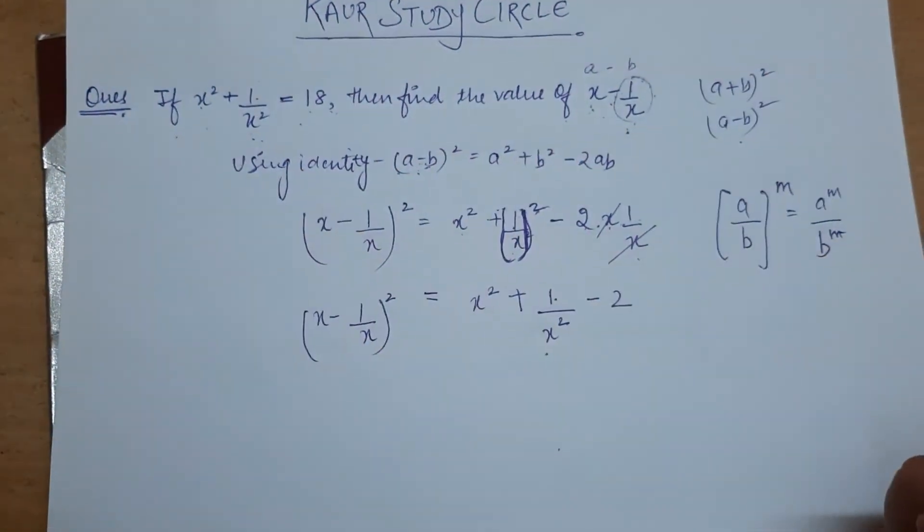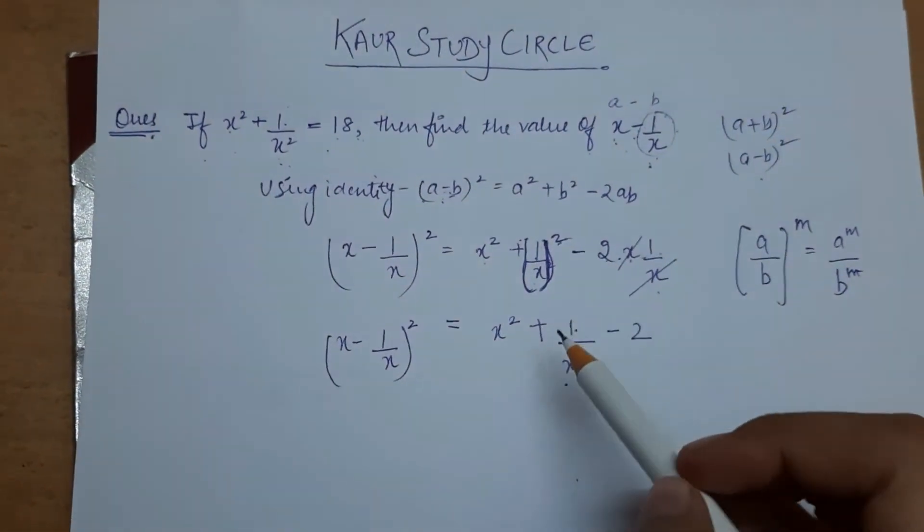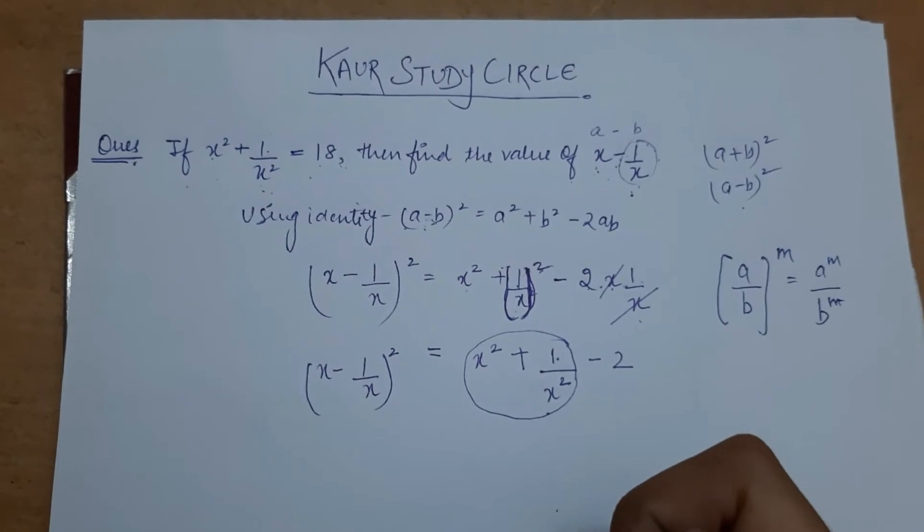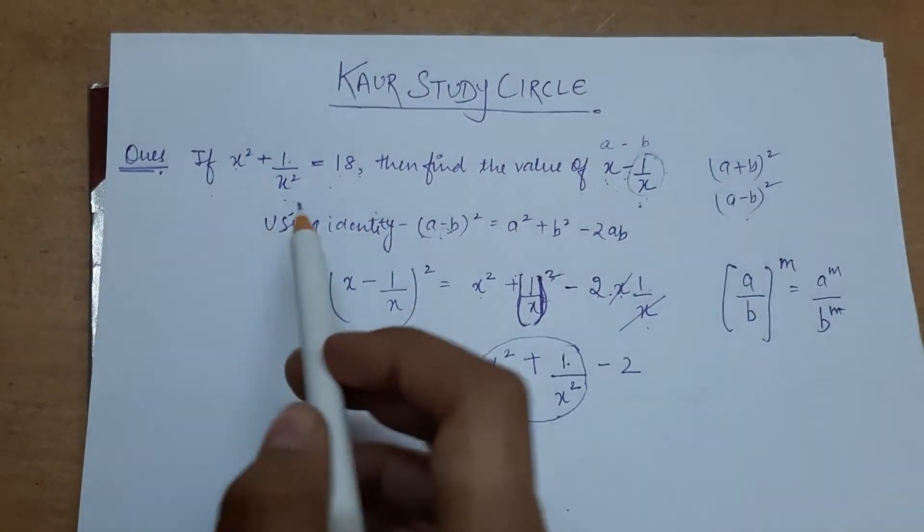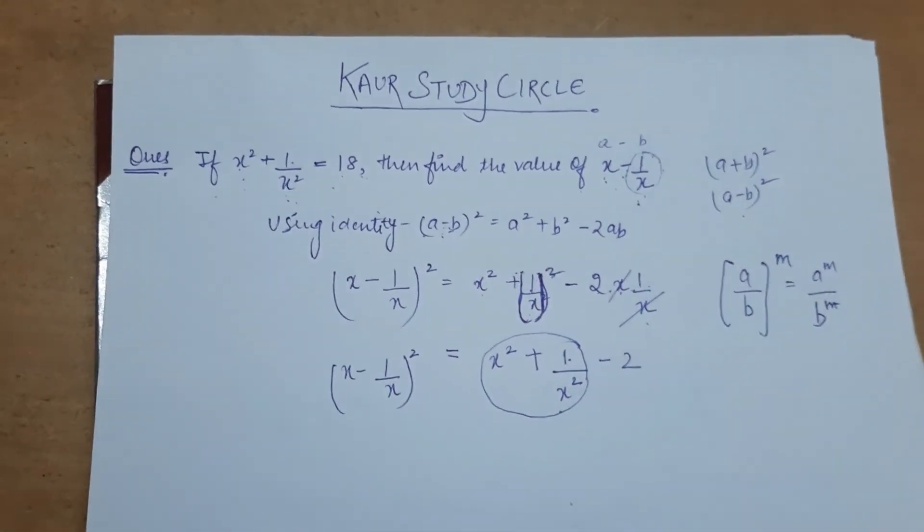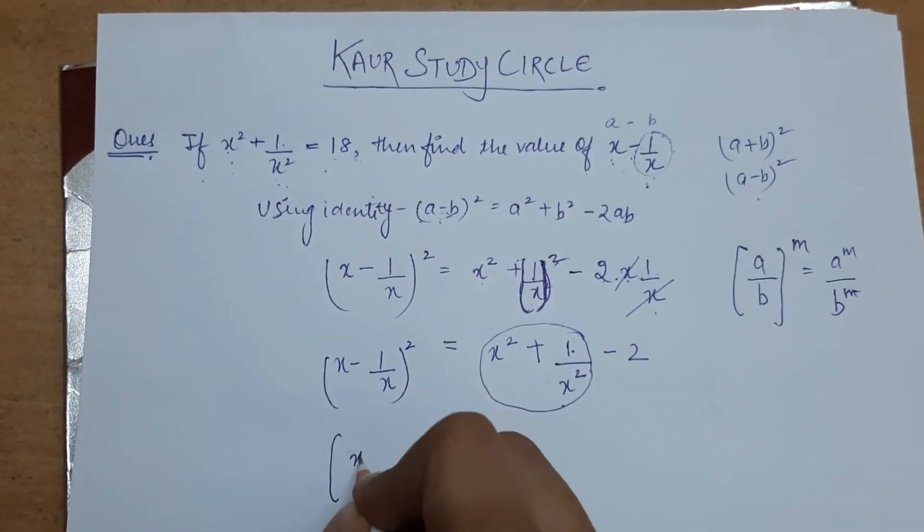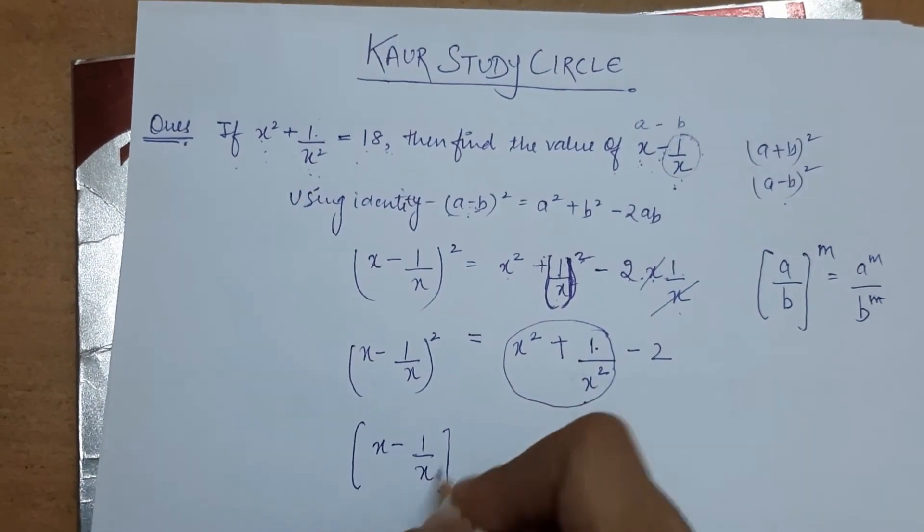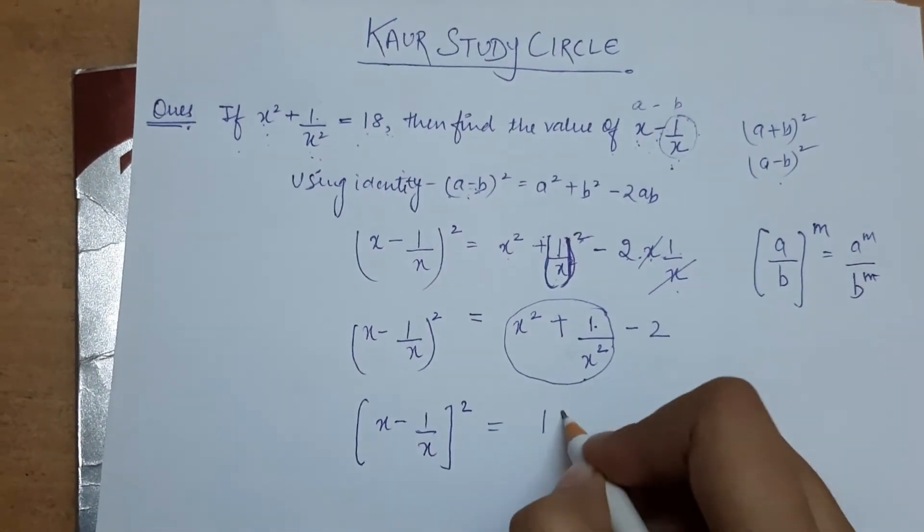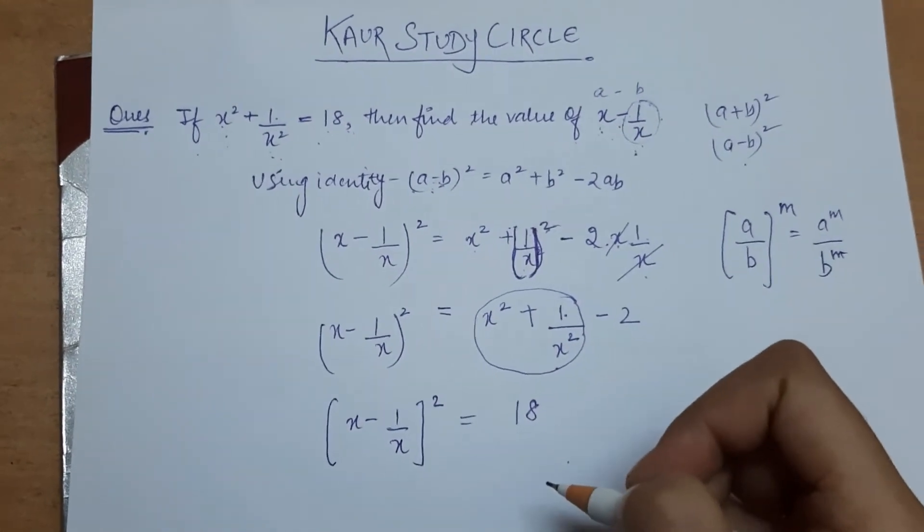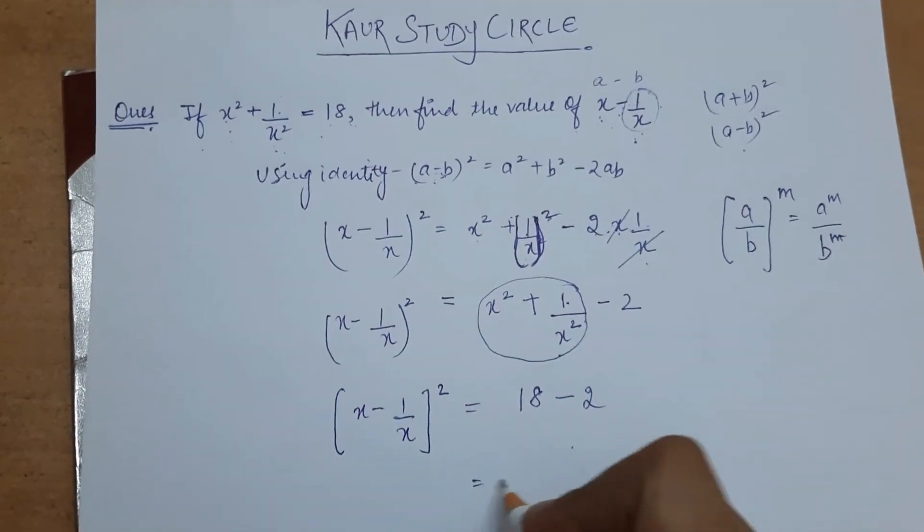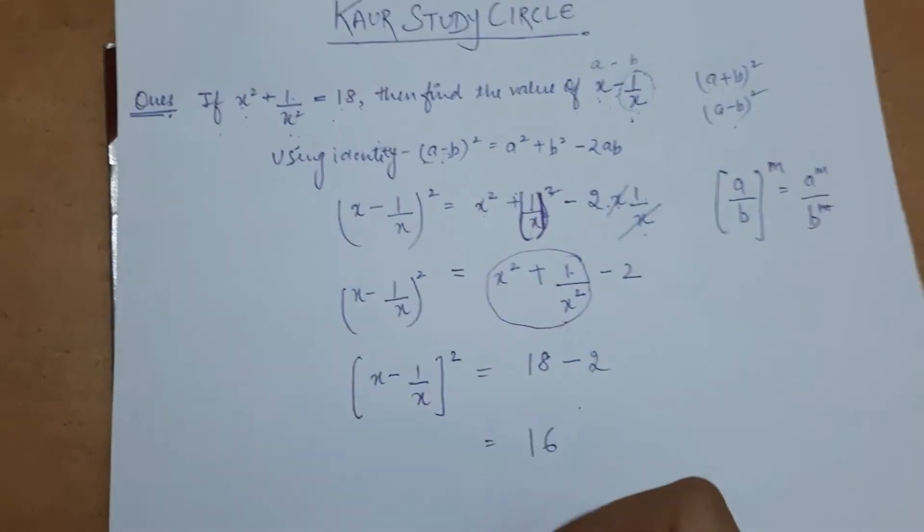Now this step is done. What is the next step? Now we can see: are we having this value in the question? Do we have this value in the question? Let's consider this value: x square plus 1 by x square equals 18. We can use that. So the left-hand side is the same, x minus 1 by x whole square equals, and this value is 18.